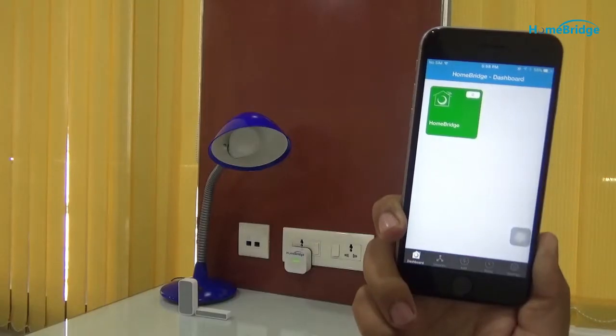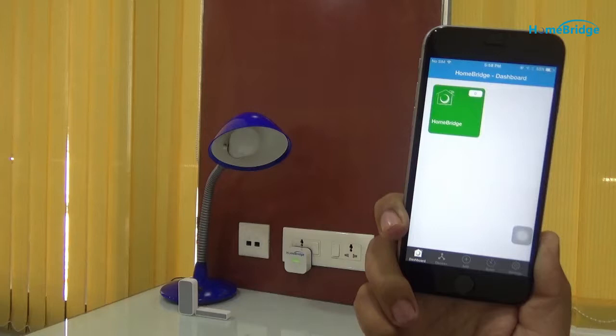Now, make sure that HomeBridge is connected to the local network. You can check this by ensuring that HomeBridge has green light powered on it.